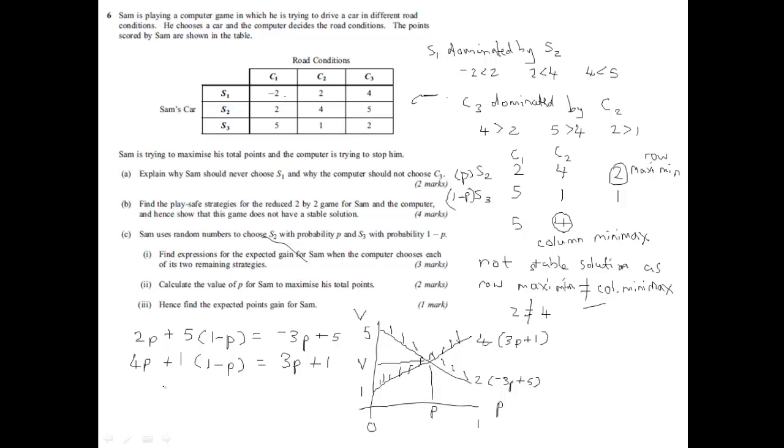So, if we move over here. We have minus 3P plus 5 equals 3P plus 1. So, 6P equals 4. So, P equals 2 thirds. And we could have worked that out just with the simultaneous equations without the graph. But you're often asked to draw the graph. So, it's handy to see what's going on there. So, this value here is 2 thirds.